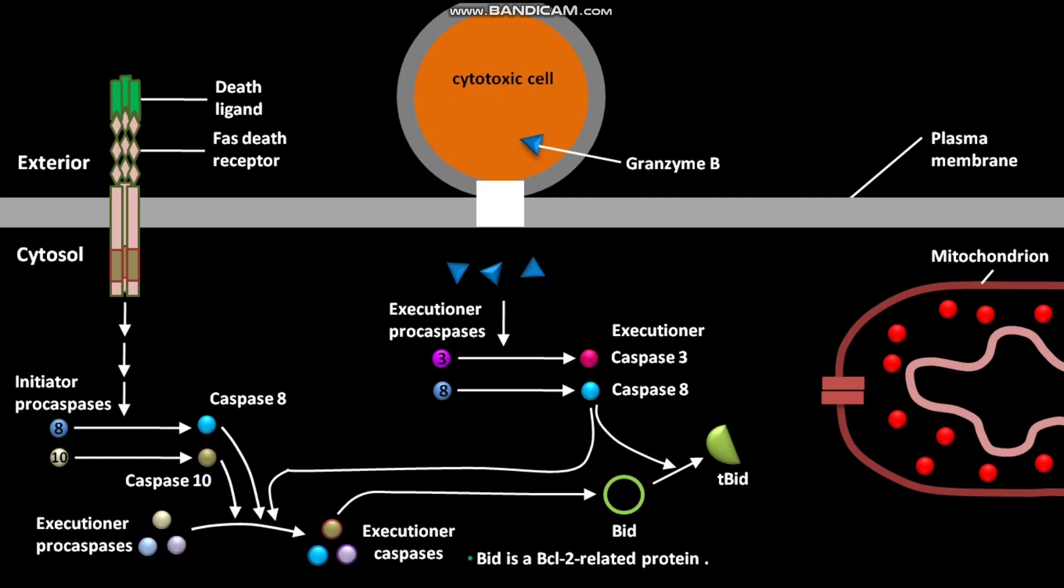The cytosolic t-Bid then moves to the mitochondrion. In the mitochondrion, t-Bid initiates or starts opening of the outer mitochondrial membrane channel. The mitochondrial cytochrome C then passes through the opened outer mitochondrial membrane channel and reaches the target cell's cytosol.